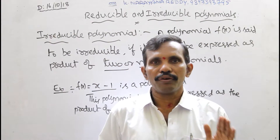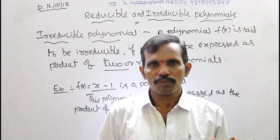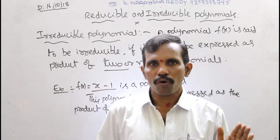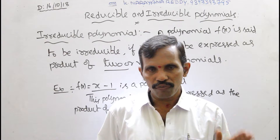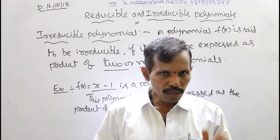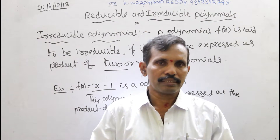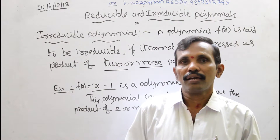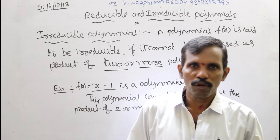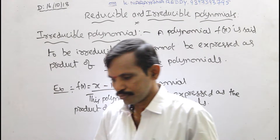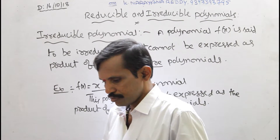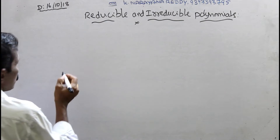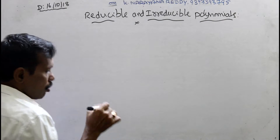Irreducible means we can't reduce the polynomial as the product of two or more polynomials — that is irreducible. Next, what is a reducible polynomial?